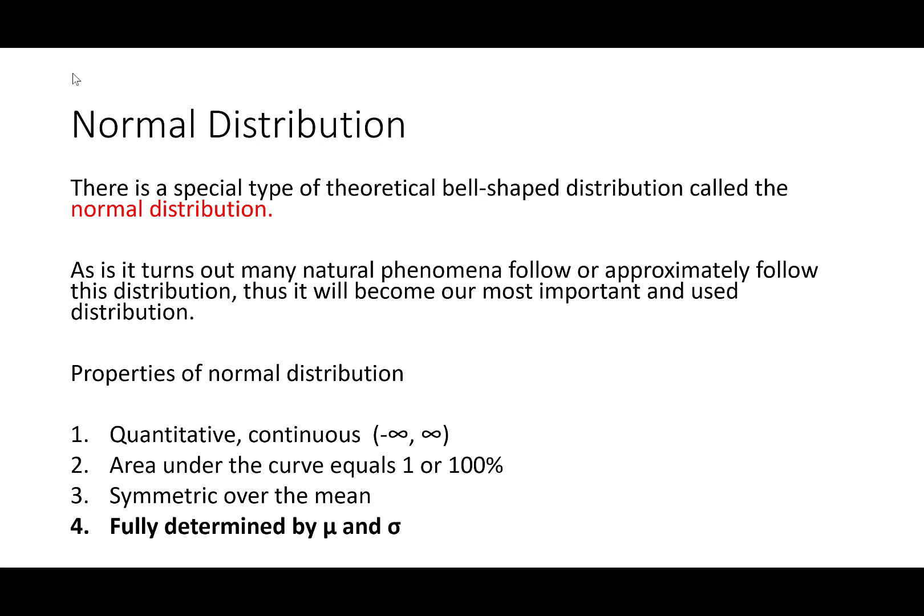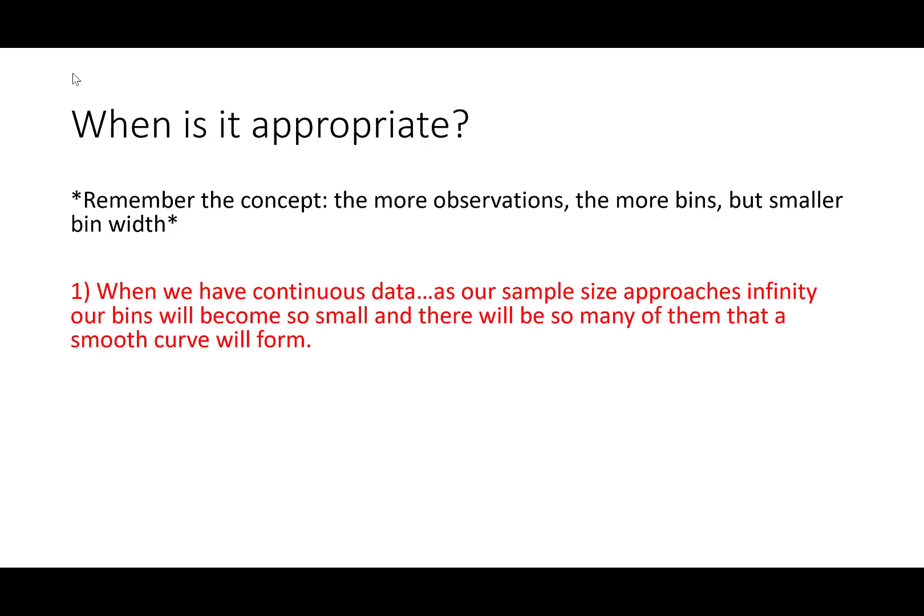Now let's learn about when we should use this normal distribution. If we have a continuous data set that follows a normal or approximately normal distribution, we'd be ready to use it. The more observations we have, the more bins we have, and the smaller bin widths we have — so the more observations, the closer your distribution becomes to a smooth curve.